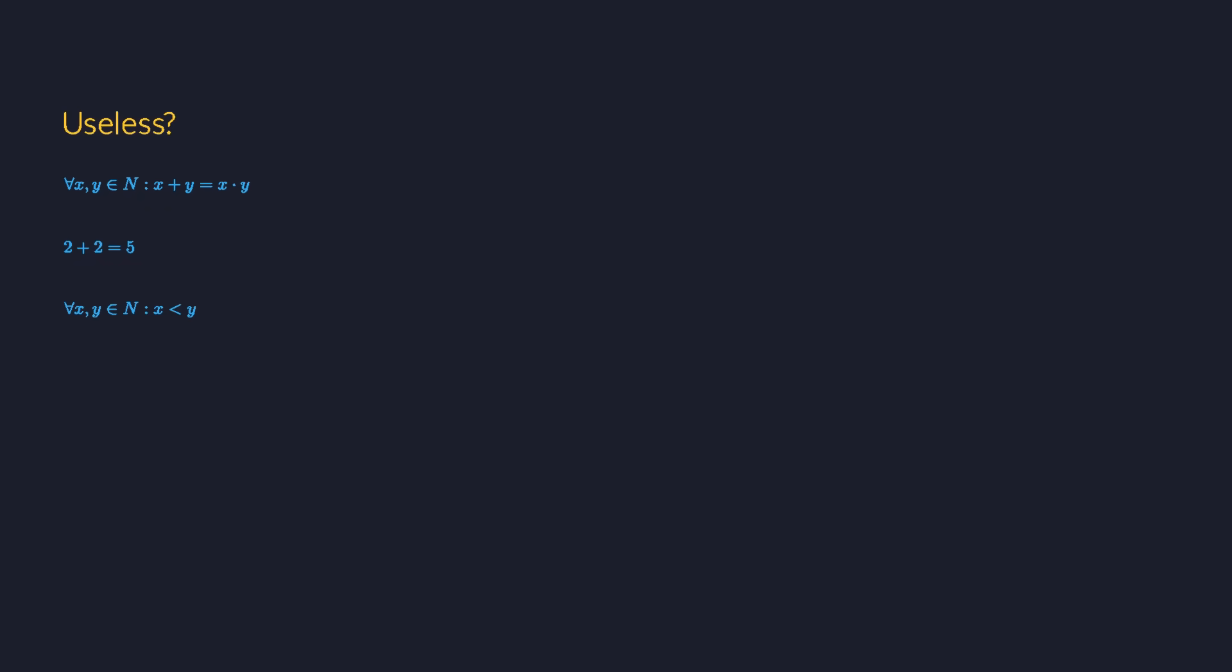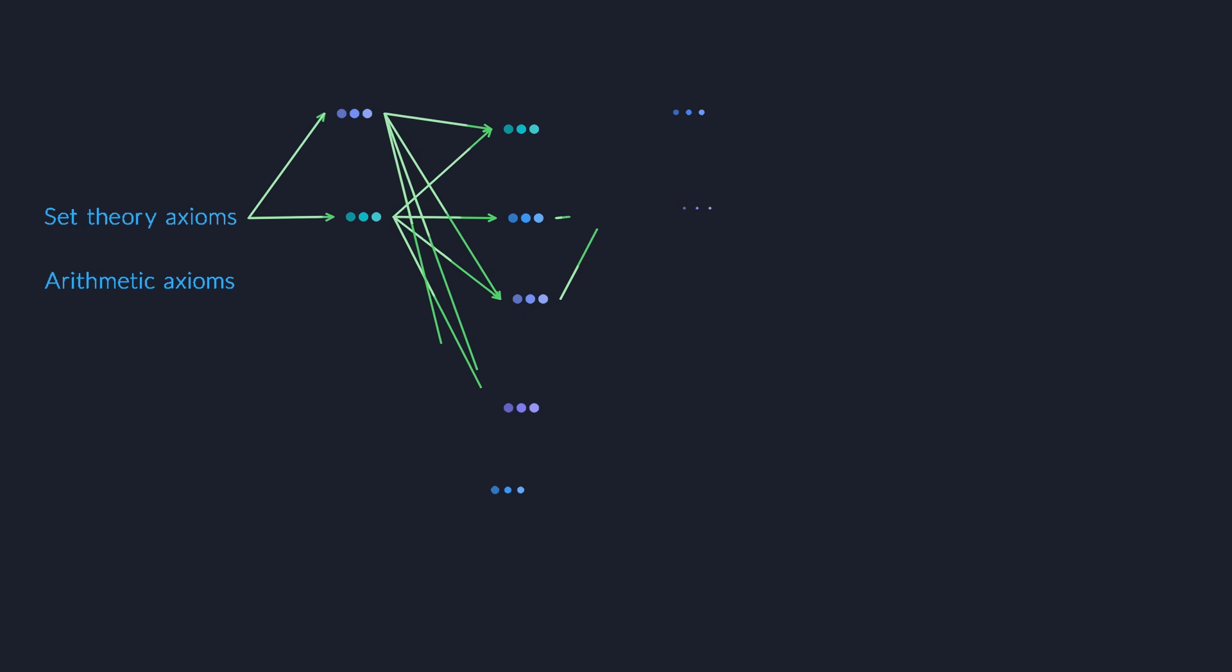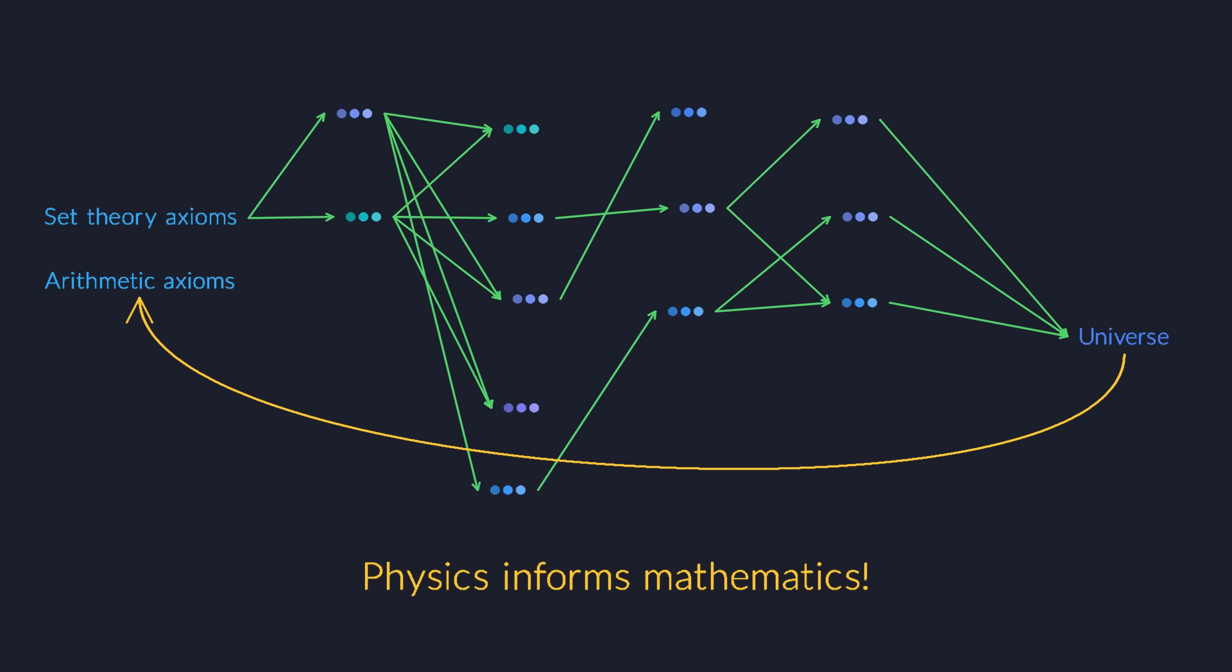For example, the axioms of set theory and arithmetic allow us to describe the real physical world very accurately. And that is why we decide to use those axioms instead of others. Ultimately, physical reality informs our mathematical choices.